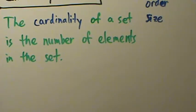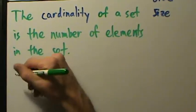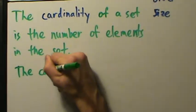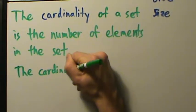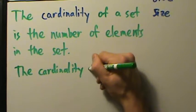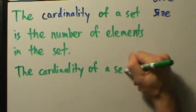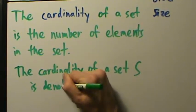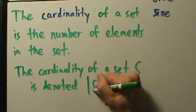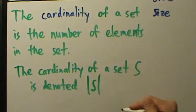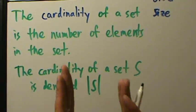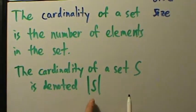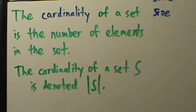Let's talk about how cardinality is denoted. If S is a set, the cardinality of S is denoted with vertical bars around it — just the set name with big vertical bars on each side. So that's how we denote the cardinality of a set.